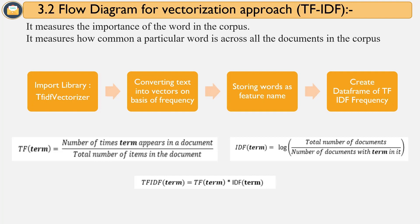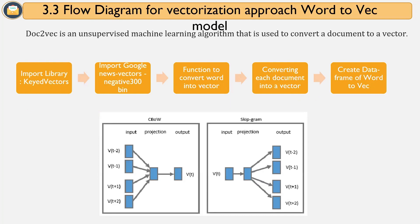TF-IDF, also called term frequency-inverse document frequency, is a product of TF and IDF. TF-IDF gives more weightage to words that are rare in the corpus and also provides more importance to words that are more frequent in the document. We imported TfidfVectorizer, converted text into vectors based on frequency, stored the feature names, and created a data frame.